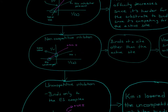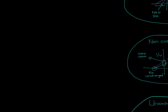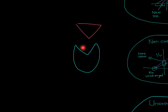Non-competitive inhibition is where the inhibitor binds at a site other than the active site. Vmax decreases since the enzyme will be inhibited, but KM doesn't change because the affinity of the substrate to the active site is unaffected. The non-competitive inhibitor binds at a separate site on the enzyme, so it doesn't compete with the substrate at the active site — that's why KM does not change.